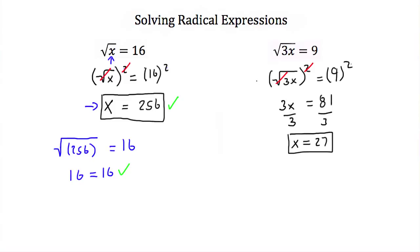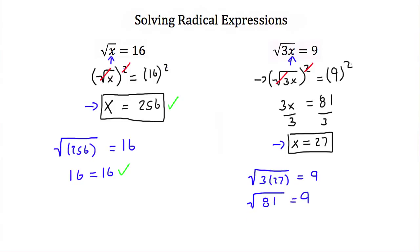But again, I took the square of both sides, so we have to check the answer. We plug x = 27 back into our original equation: the square root of 3 times 27 should equal 9. Now 3 times 27 is 81, so this is the square root of 81, which equals 9. And 9 is equal to 9, which means x = 27 is a valid solution.